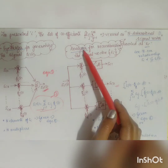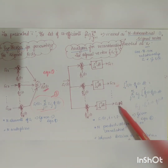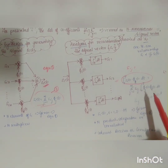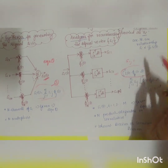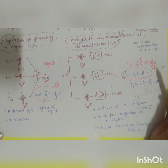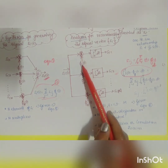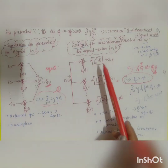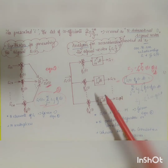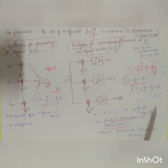The second block diagram is the analyzer — used for reconstructing the signal vector. The input is the signal s_i(t), which is fed to multipliers whose other inputs are phi_1(t), phi_2(t), ..., phi_N(t). Each product is passed through an integrator from 0 to T to yield the coefficients s_i1, s_i2, ..., s_iN. This implements equation 2: s_ij = integral from 0 to T of s_i(t) × phi_j(t) dt. This is also called a correlator, product integrator, coherent receiver, or correlation receiver.